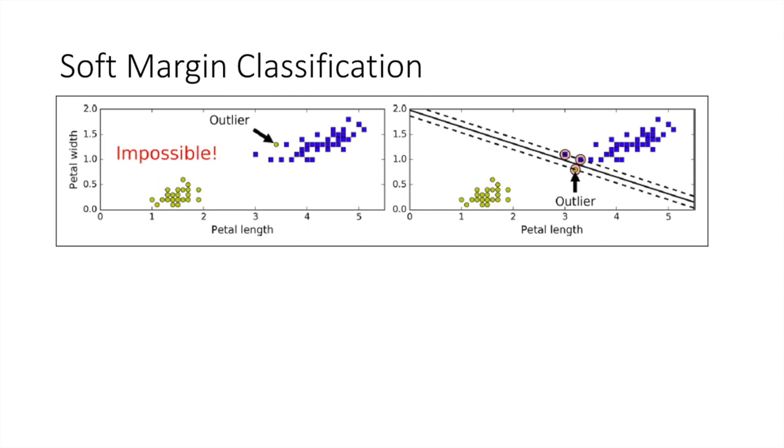In the figure here, you see the iris dataset with just one additional outlier on the left. It is impossible to find a hard margin. And on the right, the decision boundary ends up very different from the one you saw previously without that outlier, and it will probably not generalize as well.